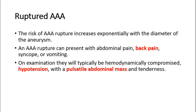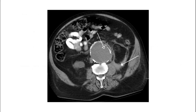On examination, the patient will typically be hemodynamically compromised, with a pulsatile abdominal mass and tenderness. This CT scan shows a ruptured AAA rupturing into the retroperitoneal space.